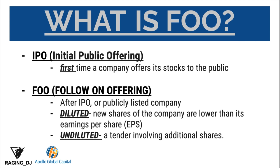First, let me explain what is FOO or follow-on offering. We have two important terms here: the IPO and the FOO. The difference between these two is the timing of when they are offered to the public. IPO or Initial Public Offering is the first time a company offered stocks to the public — the most common example is the Merrimark IPO offered last year. The FOO or follow-on offering is usually done after the IPO by a publicly listed company, meaning this company is already trading in the stock market.